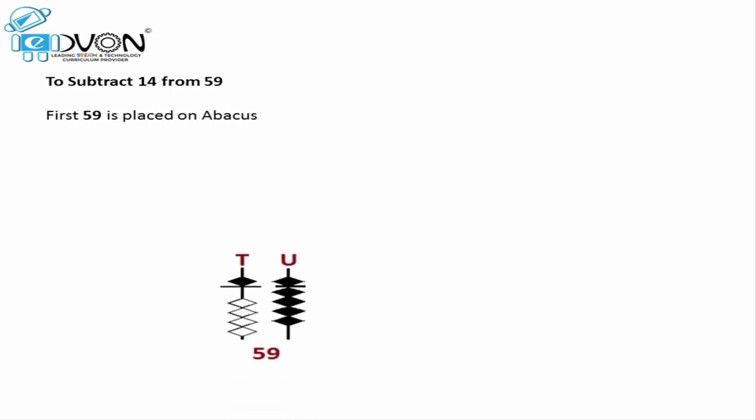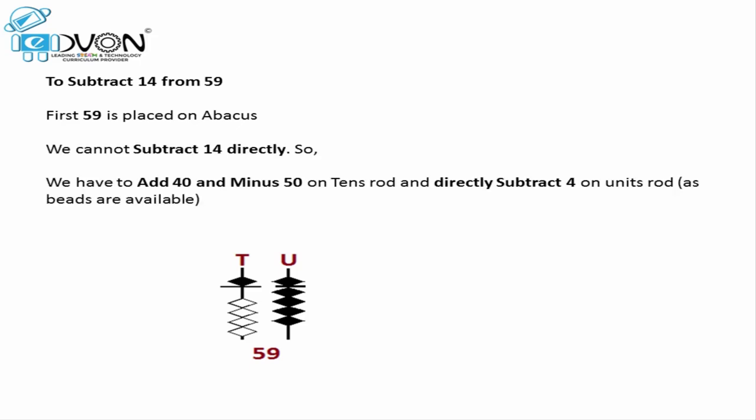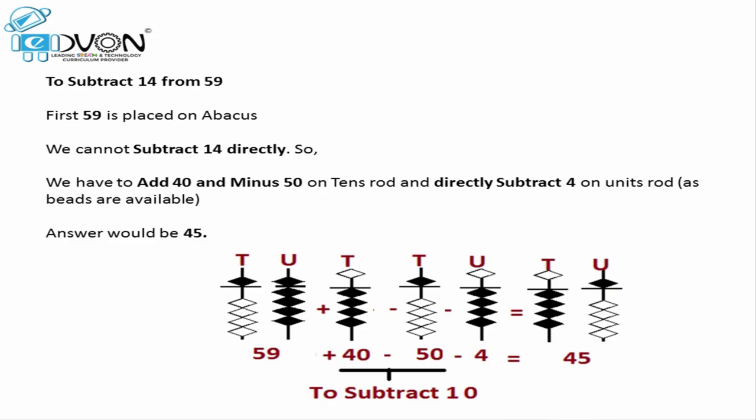Let's take one example for the application of the minus 1 formula on different values. If we want to subtract 14 from 59, first we place 59 on the abacus. To subtract 14, we don't have any lower beads available on the tens rod to subtract the 10 of 14 directly. So we apply the formula only on the tens rod: add 40 and minus 50 on the tens rod. We can directly subtract the 4 of 14 on units as we have 4 lower beads available. As a result we get 4 lower beads on the tens rod and the upper bead on the units rod, representing the value 45. So our answer is 45.